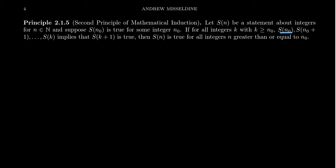Then we're going to assume Sn sub zero, Sn sub zero plus one, Sn sub zero plus two, Sn sub zero plus three, up to Sk. This implies Sk plus one is true. Then Sn is true for all integers n greater than or equal to n sub zero here.